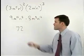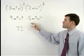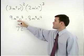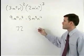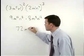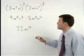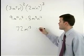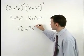But we must add the exponents on the like bases. So m to the tenth times m to the third is m to the thirteenth. And n squared times n to the twelfth is n to the fourteenth.